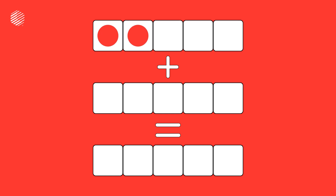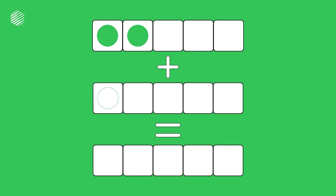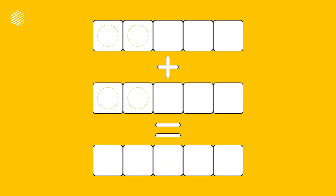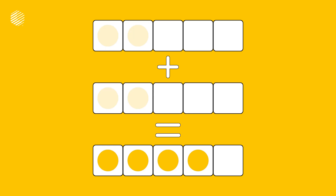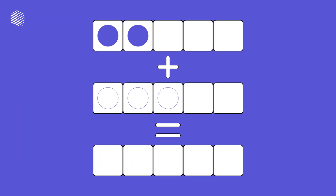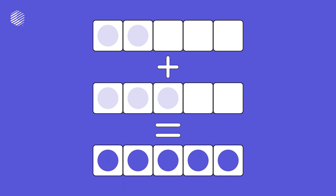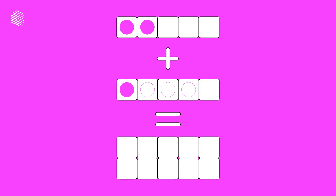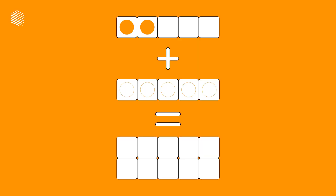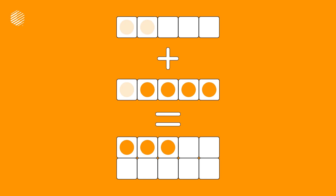2 plus 0 equals 2. 2 plus 1 equals 3. 2 plus 2 equals 4. 2 plus 3 equals 5. 2 plus 4 equals 6. 2 plus 5 equals 7.